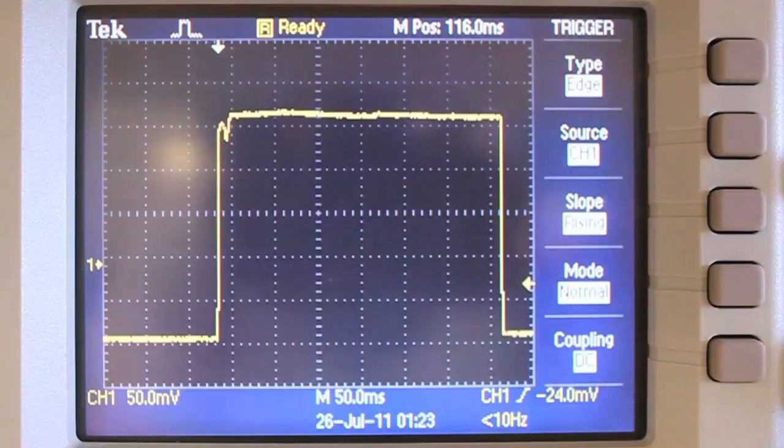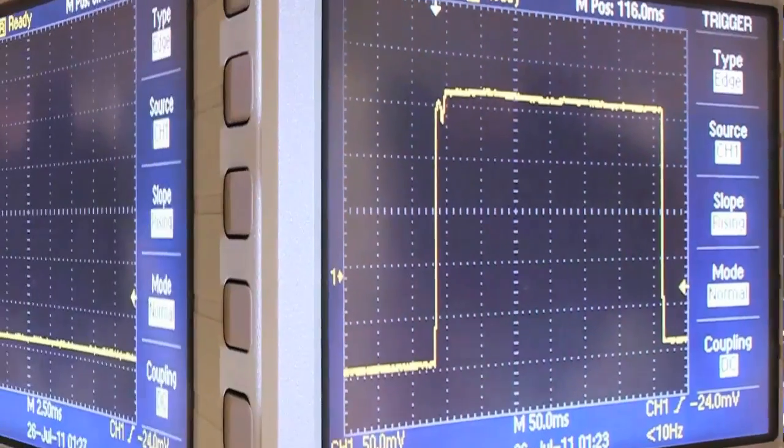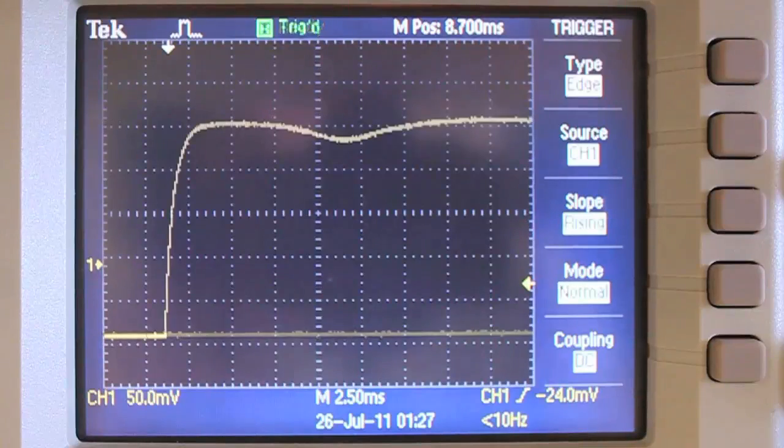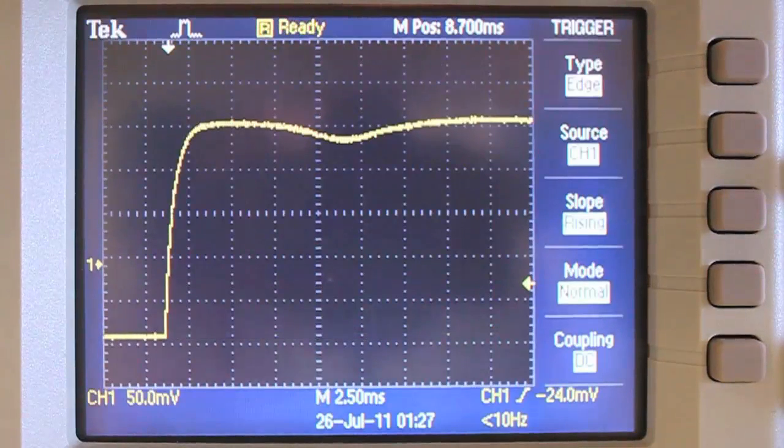You should see the current rise quickly to a constant value and you should see a dip due to the back EMF generated by the magnets as they are leaving the coil.